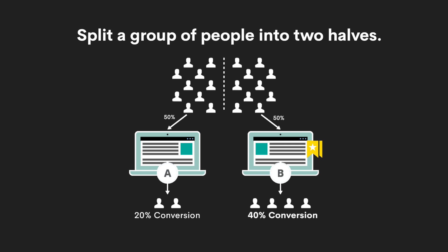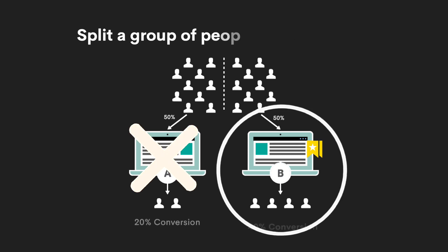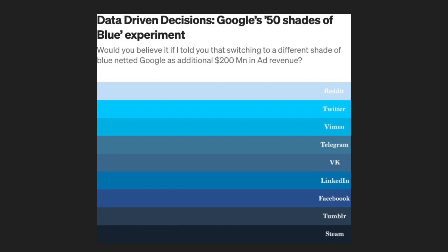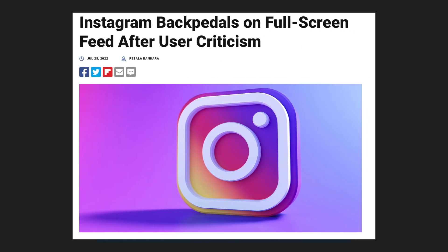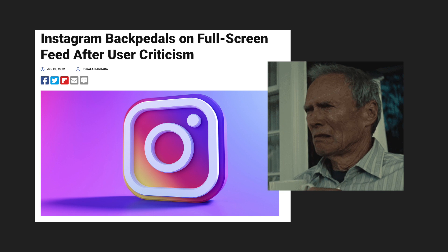These are important tests that help businesses make decisions. It can help you decide which features to keep and which ones to remove, or which shade of color is better — even changing the shade of blue can lead to a lot more money. But it can also have the opposite effect, like Instagram did when they tried to change their feed to be more full screen to keep up with TikTok, and users in the test group just hated it.